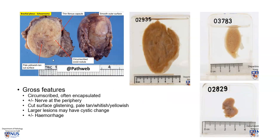Grossly, these tumors are usually circumscribed, and in fact they are often encapsulated. Sometimes you may actually see the nerve of origin somewhere at the periphery of the tumor. The cut surface is usually glistening and has a pale, tan, whitish, or sometimes yellowish appearance, as we can see here.